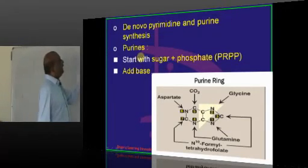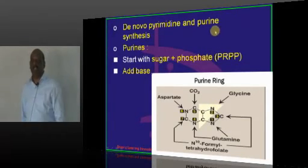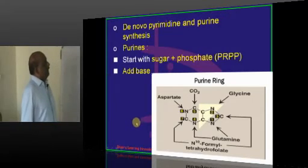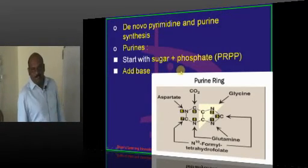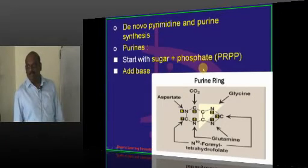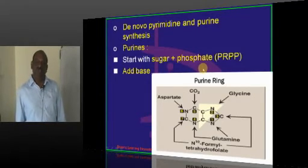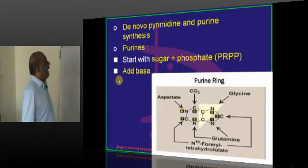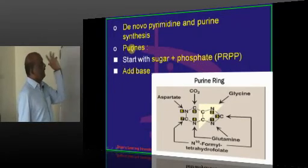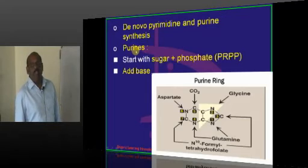So, if you look at the purines, de novo biosynthesis, that means from scratch, how are the purines produced. They require one sugar. They require a phosphate. Phosphoribosyl pyrophosphate. And they add a base to that. And that becomes the purine. De novo.